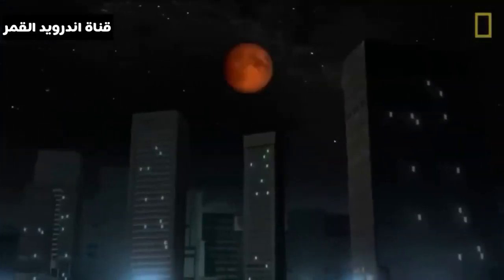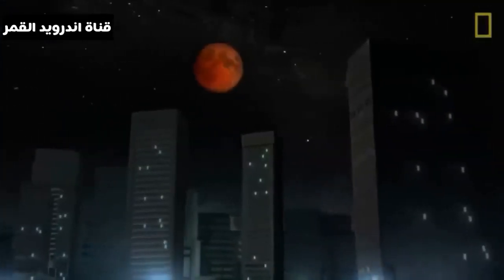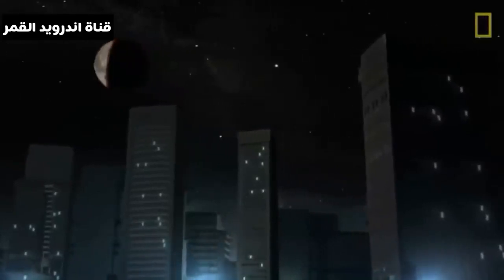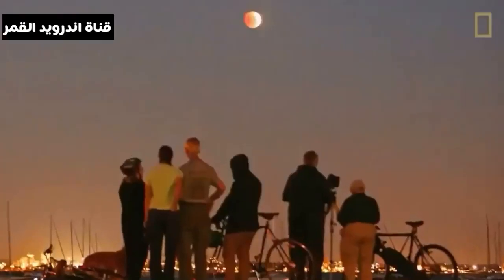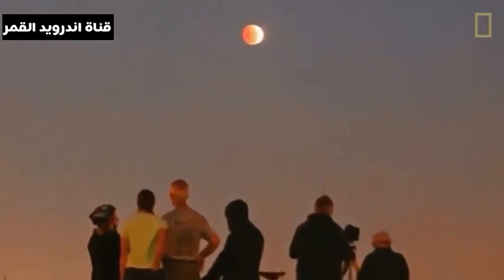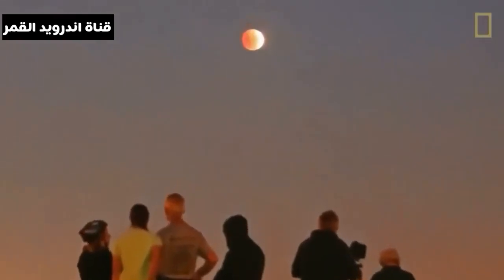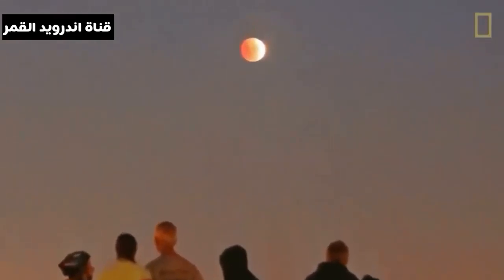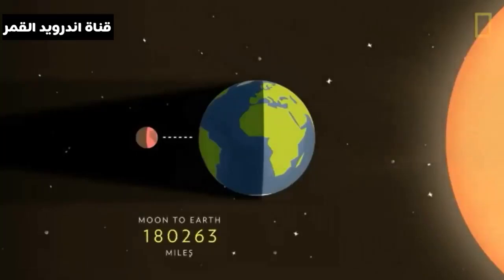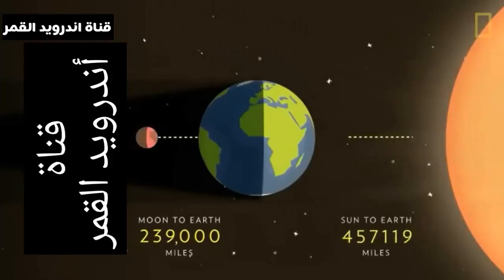Lunar eclipses occur up to three times a year and can be observed from the entire night-time half of the Earth. Unlike during a solar eclipse, it's safe to look at the Moon with the naked eye during a lunar eclipse. It is only because of the distances of the Sun and Moon from the Earth that we are able to witness total lunar eclipses.